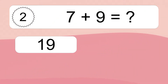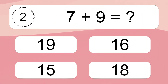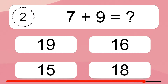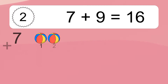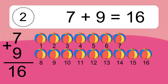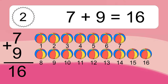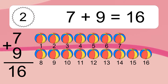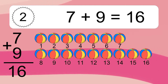7 plus 9 equals what? 7 plus 9 equals 16. Let's count it: 1, 2, 3, 4, 5, 6, 7, 8, 9, 10, 11, 12, 13, 14, 15, 16.